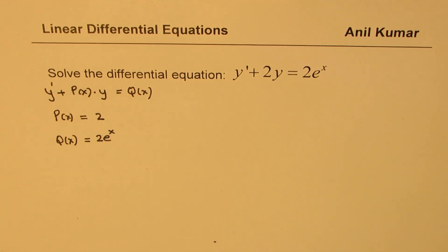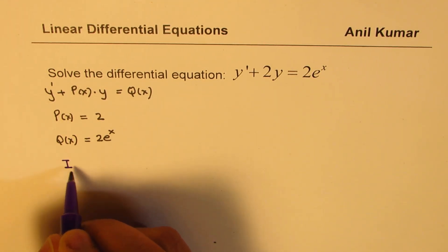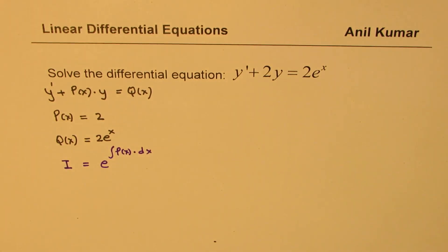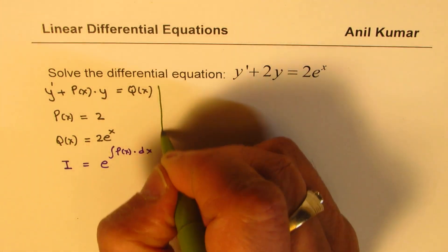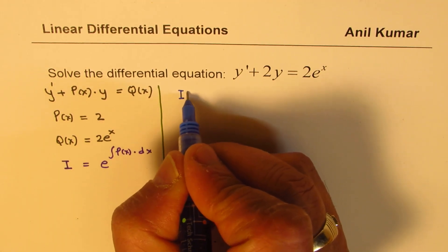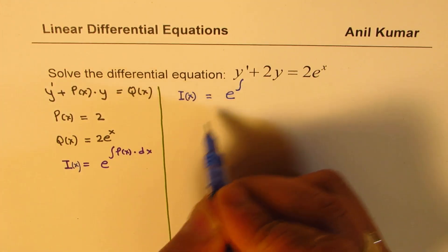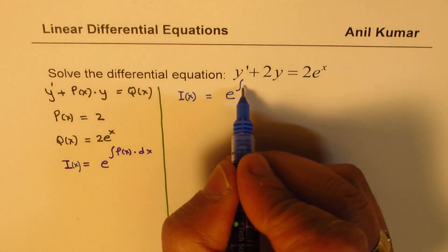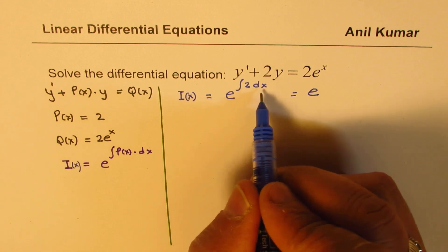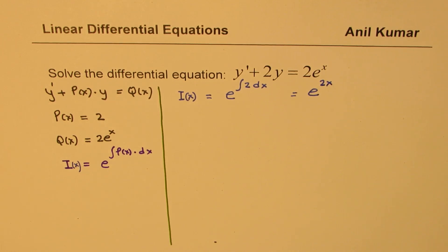The first step is to find the integrating factor i(x), which is e to the power of the integral of p(x) dx. So the integral of 2 dx is 2x, and therefore our integrating factor is e to the power of 2x.